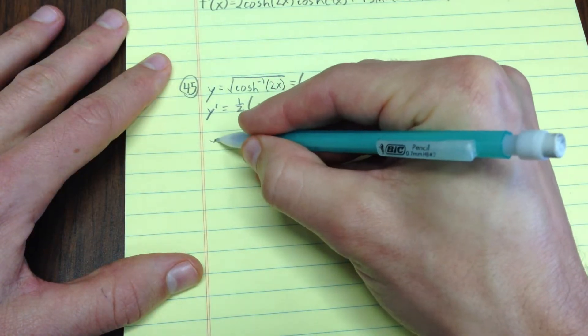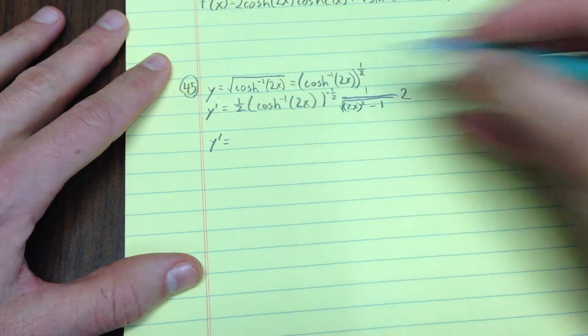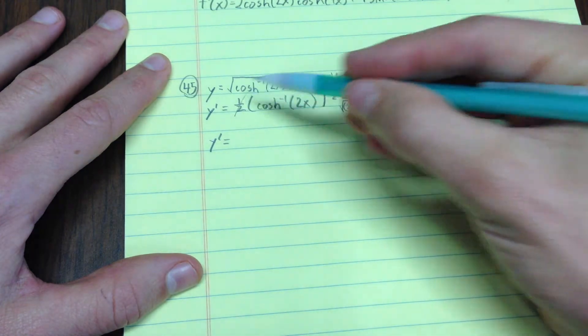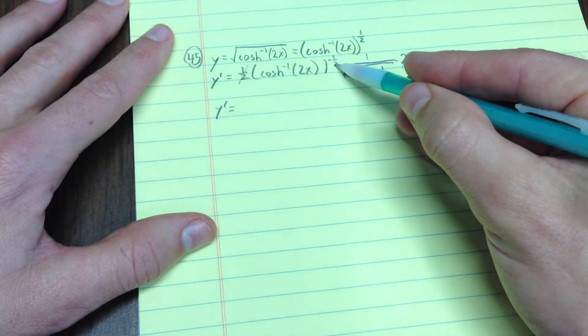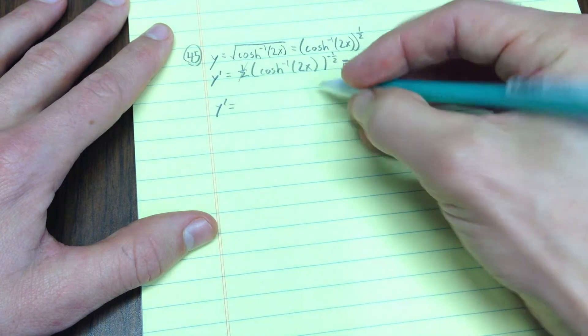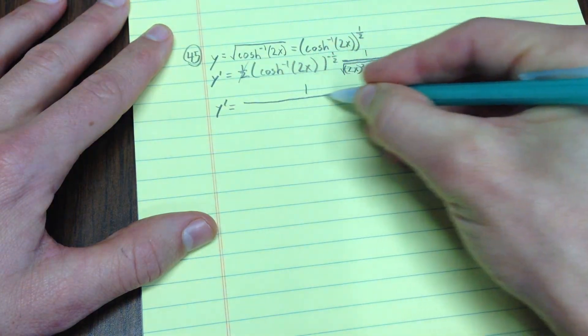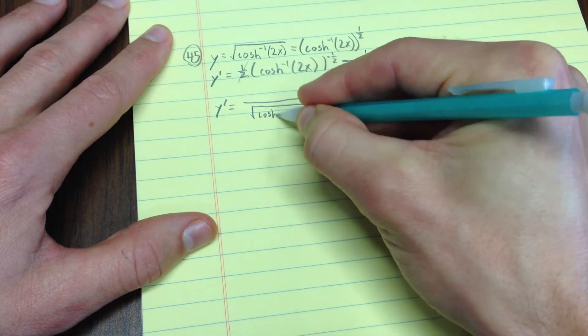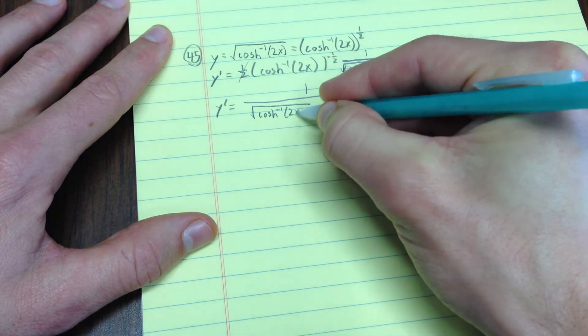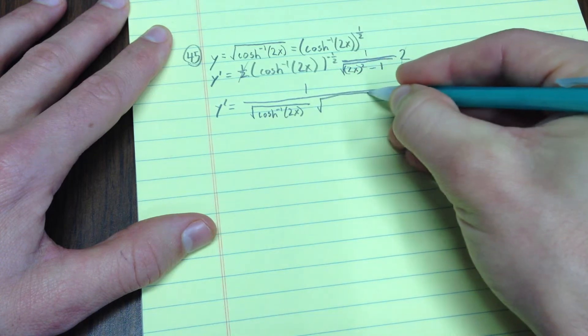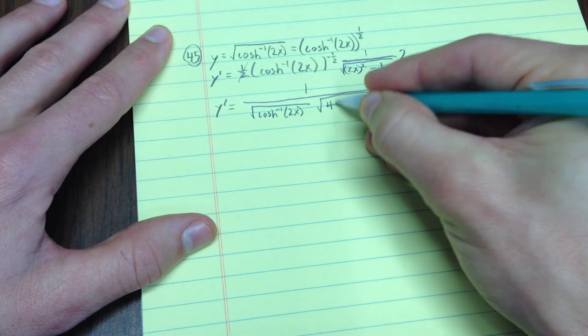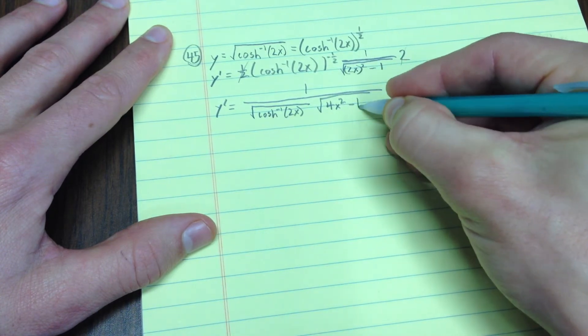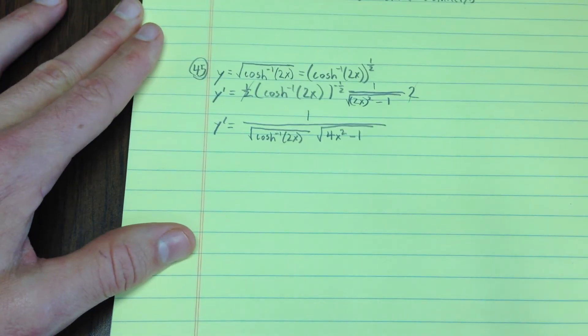Now, that simplifies a bit. Notice that 2 and 1 half cancel. I'm going to write this as a square root in the denominator, so I get 1 over the square root of cosh inverse 2x times the square root of 4x squared minus 1. There you have it.